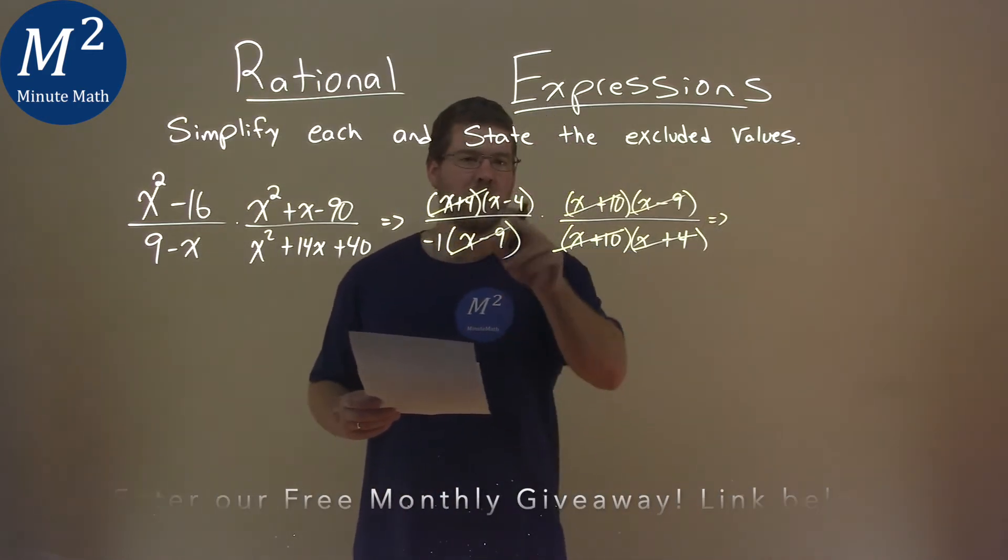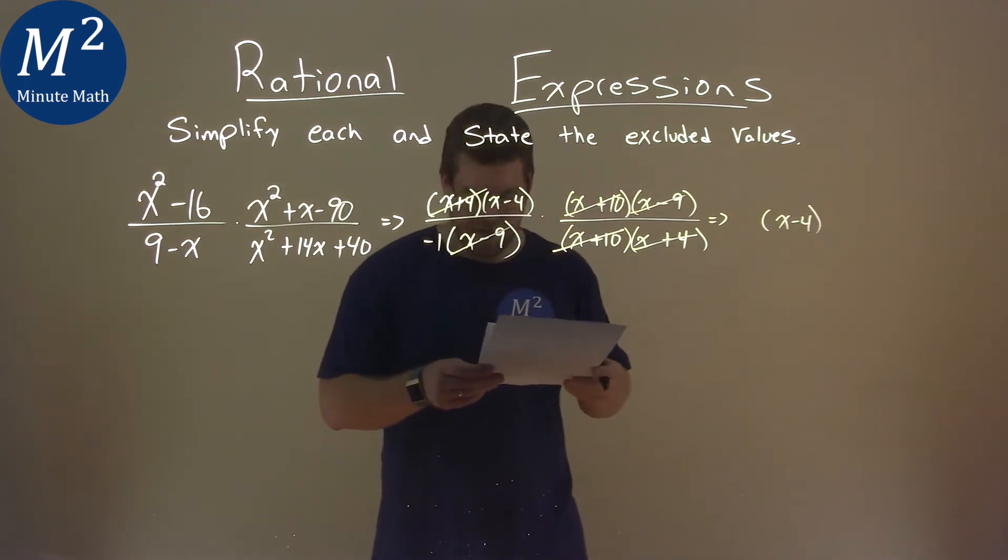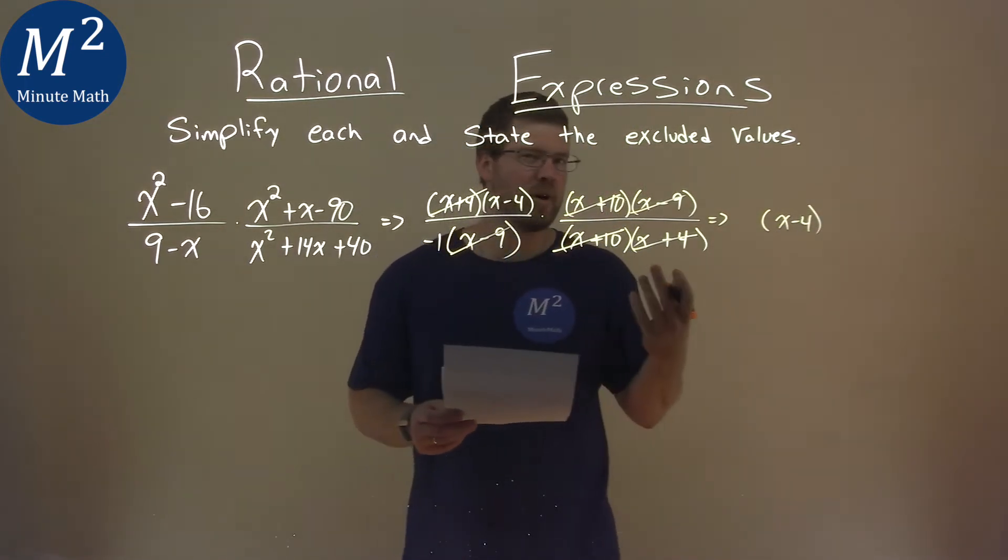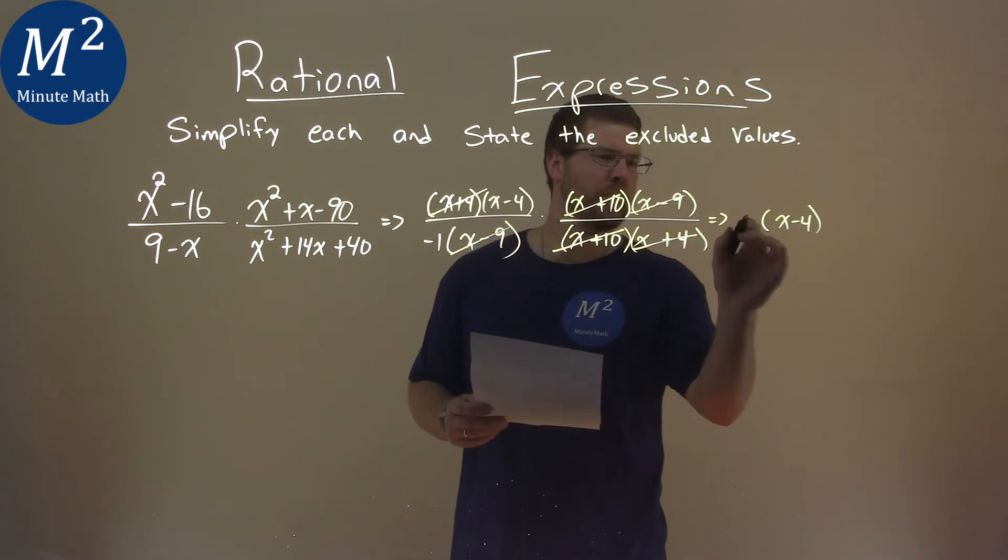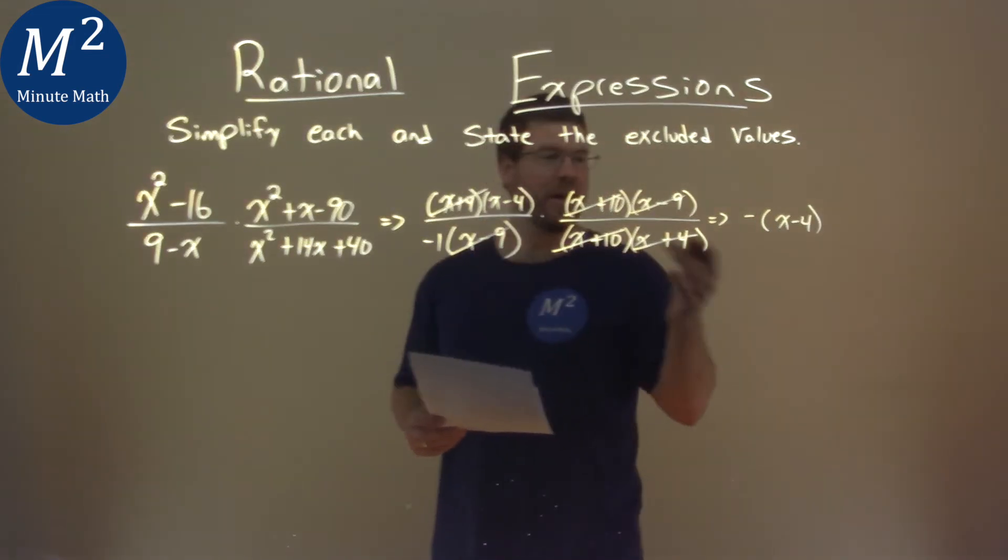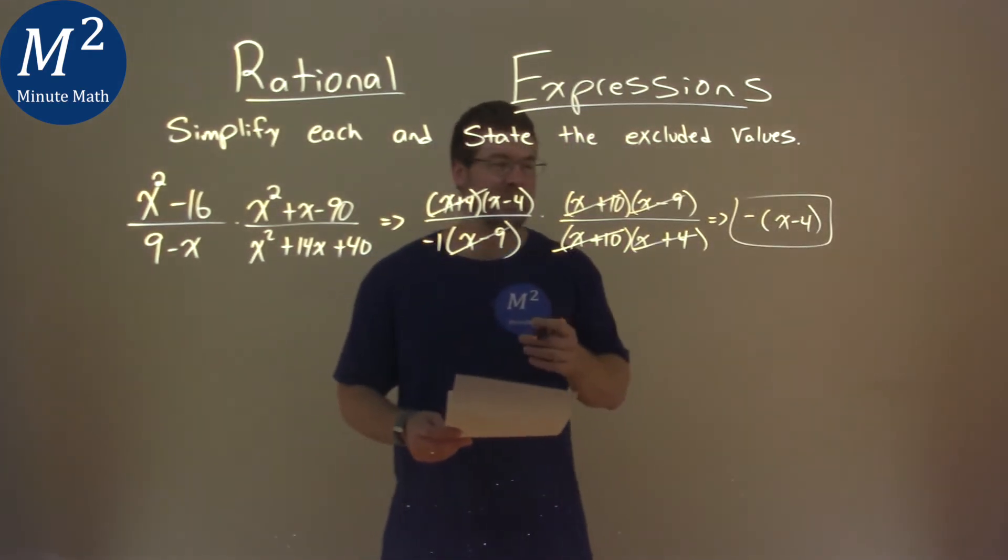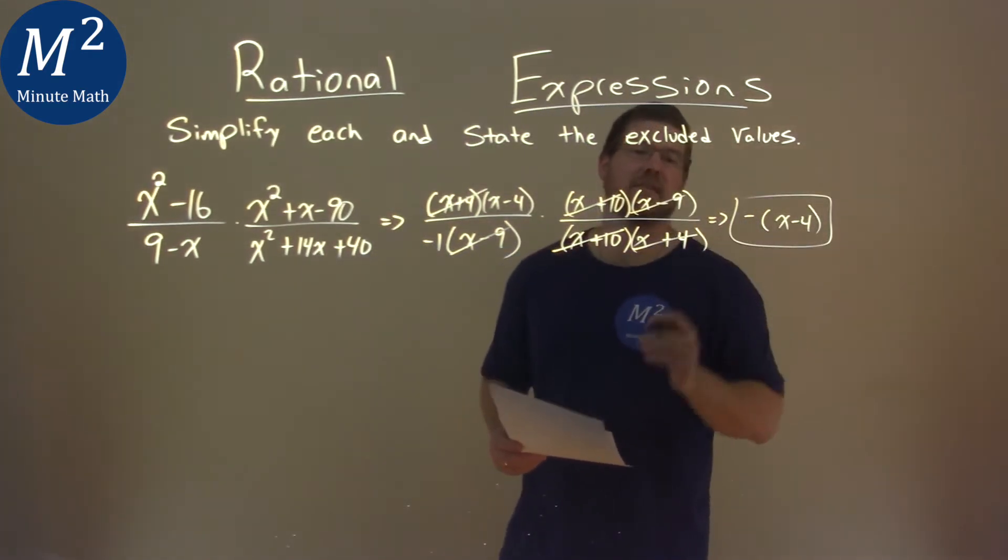This is tricky. We have the x minus 4 right there and it's being divided by negative 1, same as multiplied by negative 1. So let's put that negative out front. And that's actually it. After all that, everything simplifies or most of it does. And so our simplified answer is negative parentheses x minus 4.